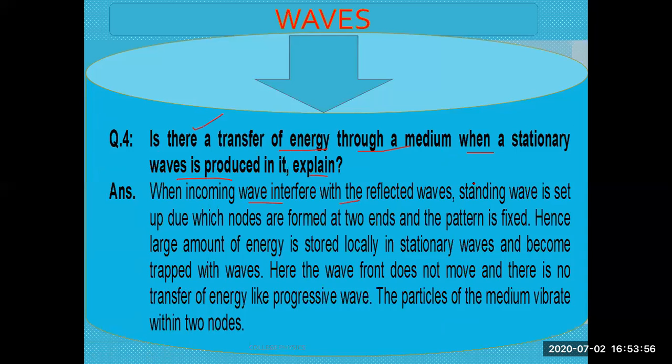When incoming waves interfere with the reflected waves, standing waves are set up because the waves having same amplitude, same frequency, same speed traveling in opposite directions. When they superimpose each other, nodes are formed at two ends. If you look, this is one of the waves here, another wave from the opposite side enters.